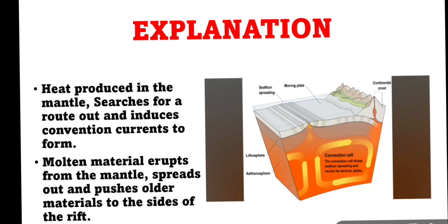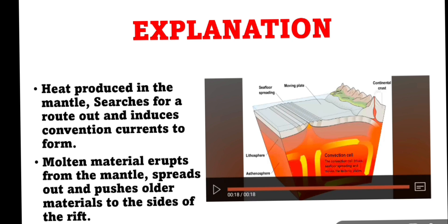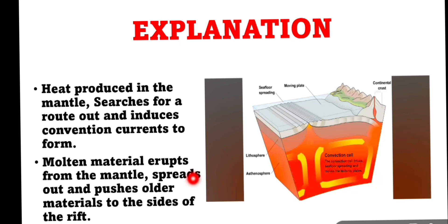Now let us understand the theory in detail. Heat produced in the mantle searches for a route out and causes convection currents to form. Molten material erupts from the mantle, spreads out, and pushes older materials to the side of the rift. Here, it can be seen that due to these convectional cells, this magma is pushed out and the ridges are formed.